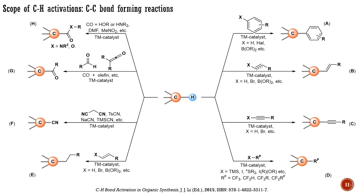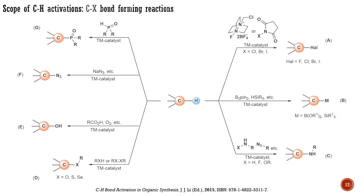The introduction of directing groups was crucial for the development of this field and has allowed scientists to achieve many challenging CH activations. The main carbon-carbon bond-forming CH transformations include the introduction of aryl, alkenyl, alkynyl, trifluoromethyl, alkyl, cyano, carbonyl, and carboxyl groups via CH activation.